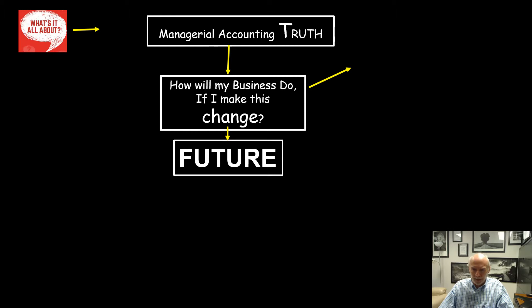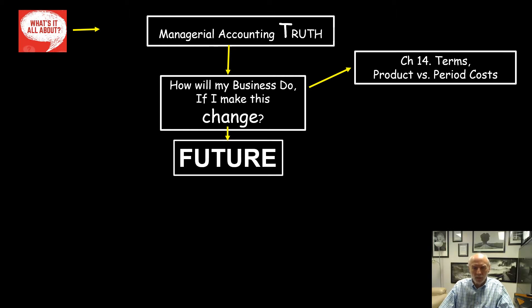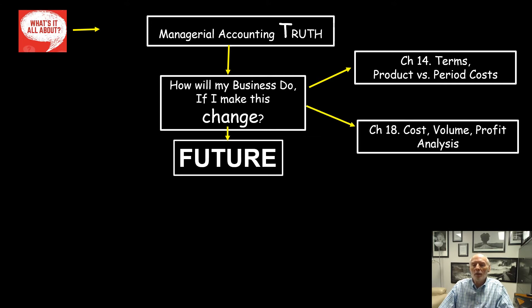In the first chapter we're going to talk about some terms — things like product costs and period costs — just to get you familiar with how the language of managerial accounting works. Then we'll look into cost volume profit analysis, which is probably the most practical chapter and the one you can get the most good out of in the real world.